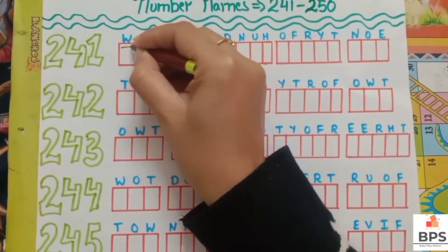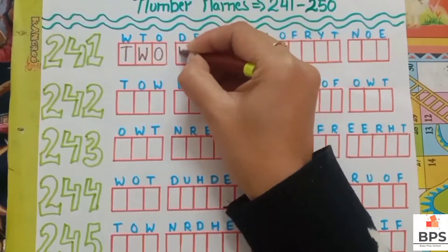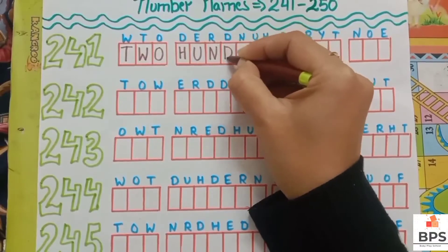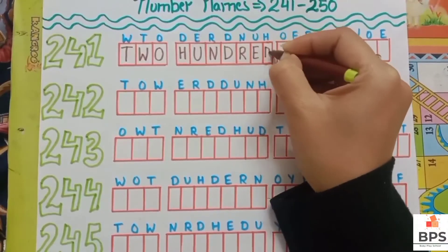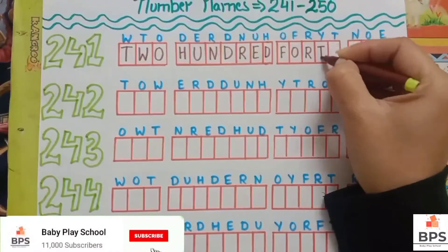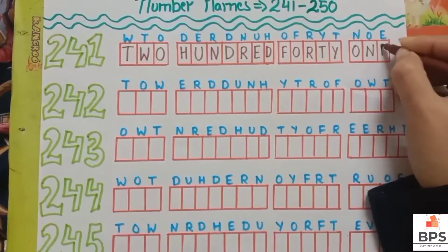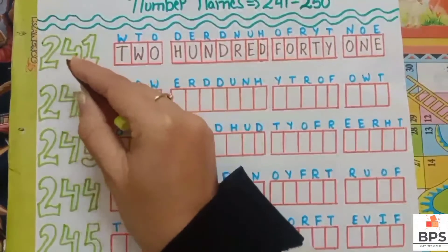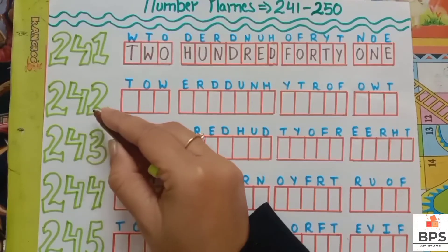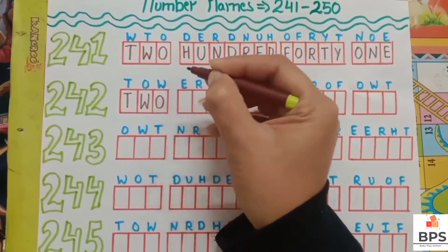Two four one — two hundred forty one. Write the spelling here: T-W-O, two; H-U-N-D-R-E-D, hundred; F-O-R-T-Y, forty; O-N-E, one. Two hundred forty one.